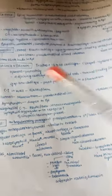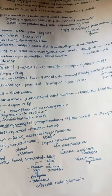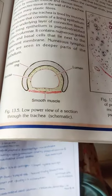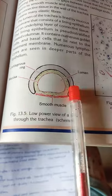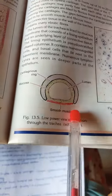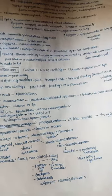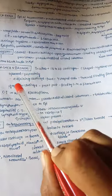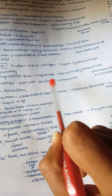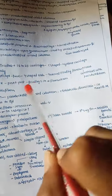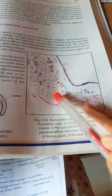The trachea has 16 to 20 cartilages which are mainly C-shaped. At low power section we can see the lumen, the smooth muscle, the C-shaped cartilage ring, and the mucosa. The trachea's C-shaped hyaline cartilage is open posteriorly. Adjoining cartilages fuse and form Y-shaped ends. The interval is filled by fibrous tissue continuous with the perichondrium.